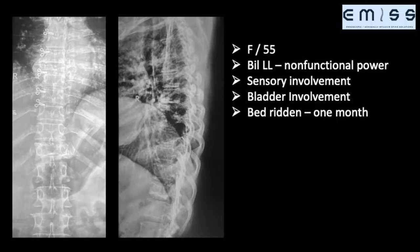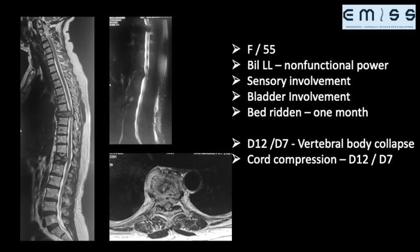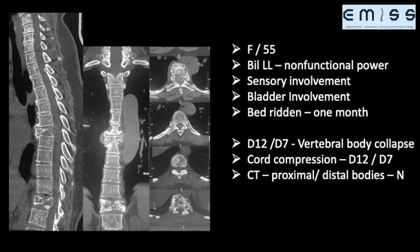This is a patient 55 years of age with bilateral lower limb non-functional power with sensory involvement and bladder involvement, and she was bedridden for one month. The MRI showed D7 and D12 vertebral body collapse with cord compression giving rise to neurological deficit. The CT scan confirmed the findings — D7 and D12 collapse — and the D12 was more symptomatic, hence we decided to treat this patient surgically by an anterior approach.